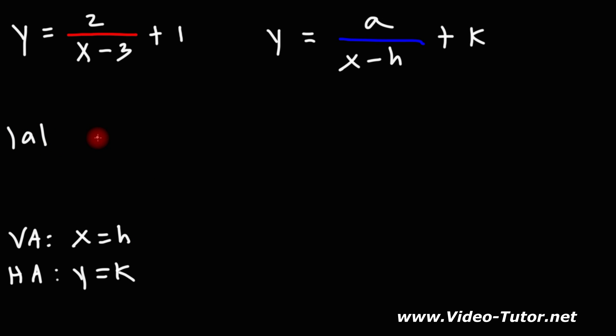Now a tells you if you have a vertical stretch or vertical shrink. If a is greater than 1, you're dealing with a vertical stretch. If the absolute value of a is less than 1 or between 0 and 1, you're dealing with a vertical shrink.